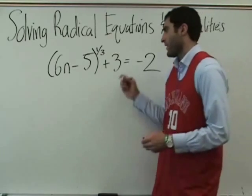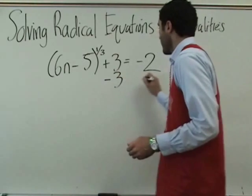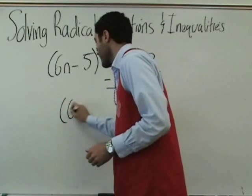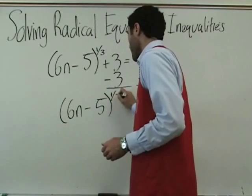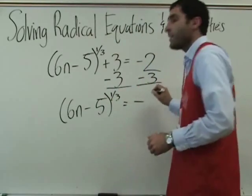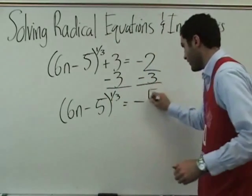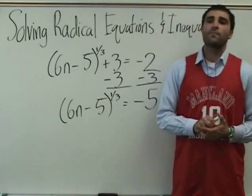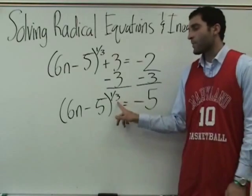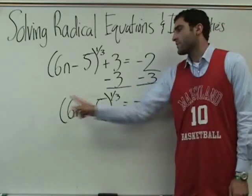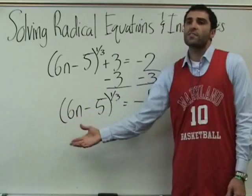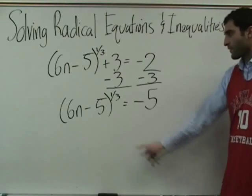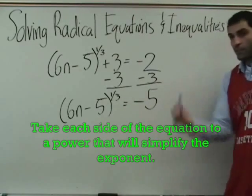What do we do to both sides? Subtract three. Very nice. Six n minus five to the one-third equals negative two. Good. Good eye. Now to get rid of a square root we squared both sides. Remember, we talked about this being a cube root. You take the denominator and put it here, or it's to the one-third. What do we do to both sides? You said it. You cube both sides to get rid of the one-third.